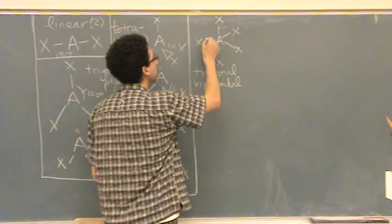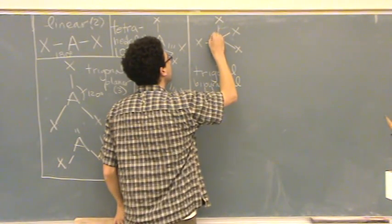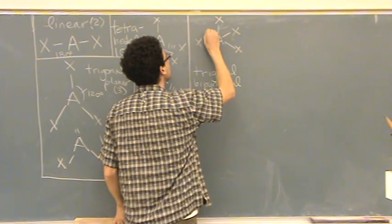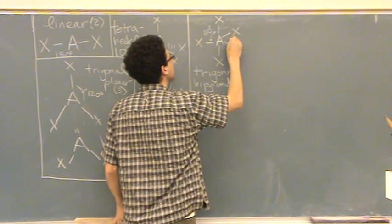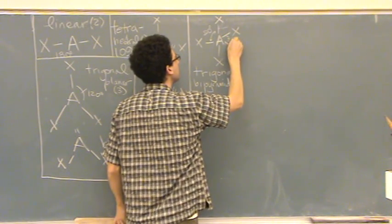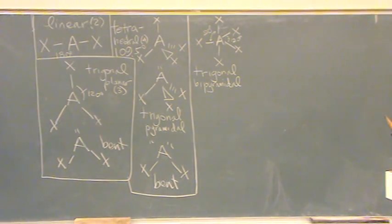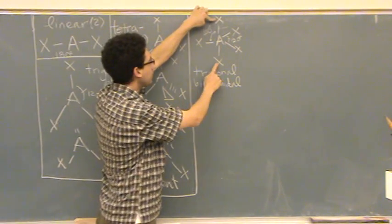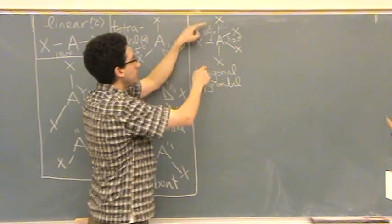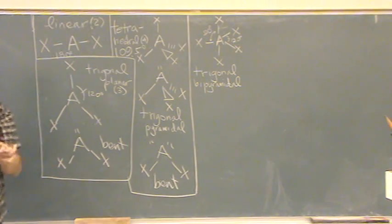So the bond angles here are 90 between these two, 90 degrees, and between these it's 120. So there's really two bond angles. The three in the middle all have 120 bond angles. Between either of these two and any of these three will have 90 degree bond angles.